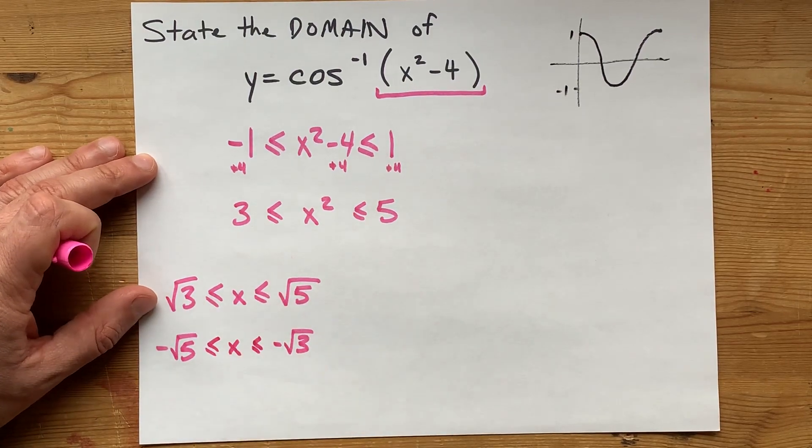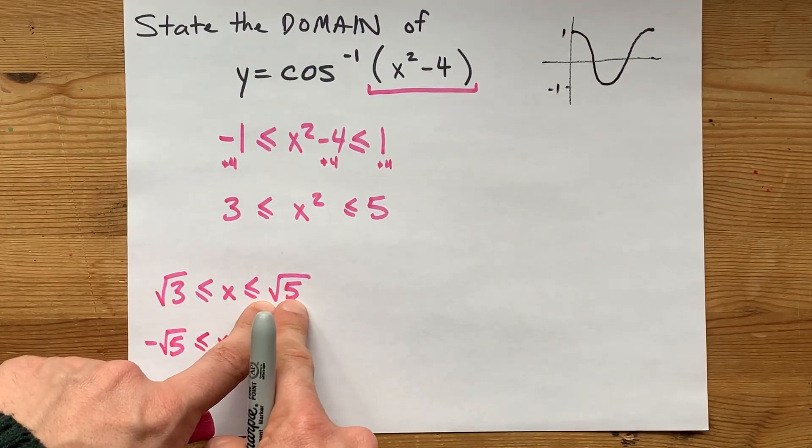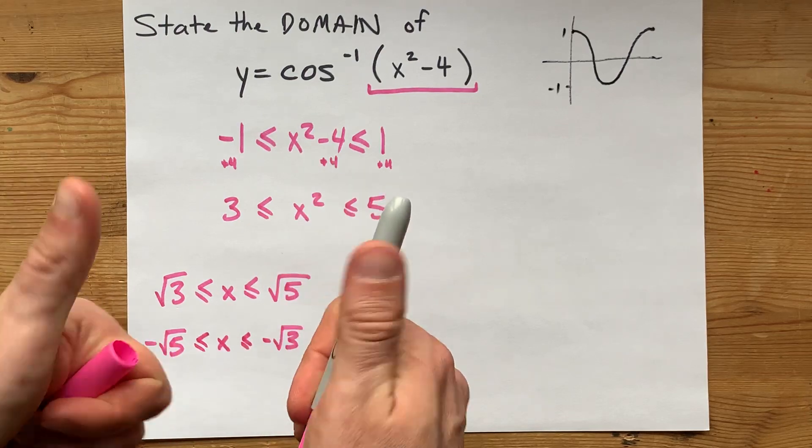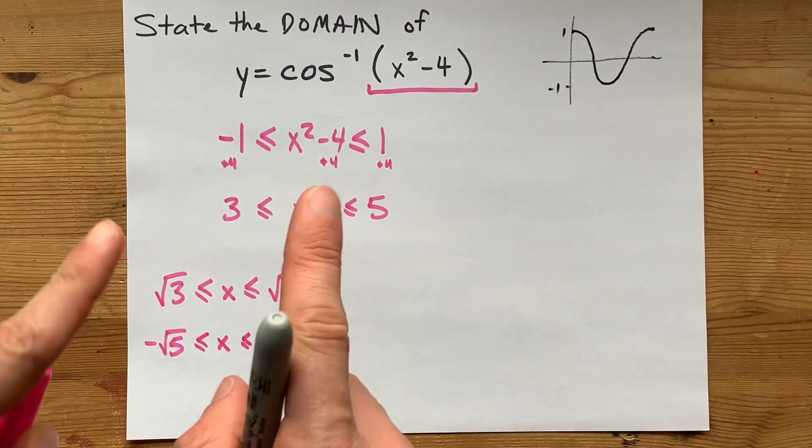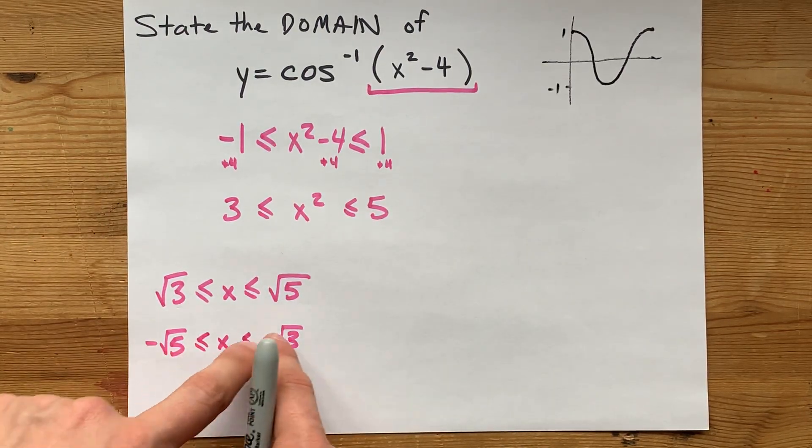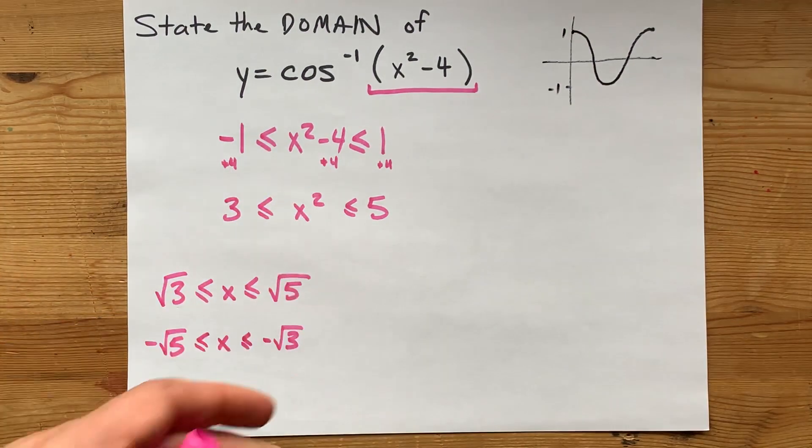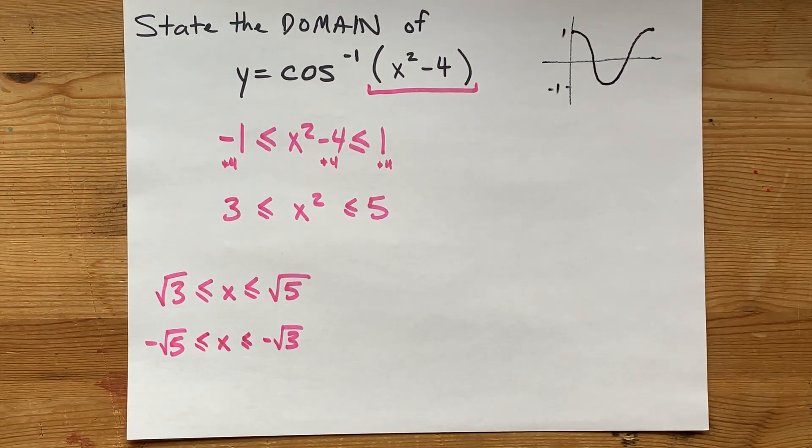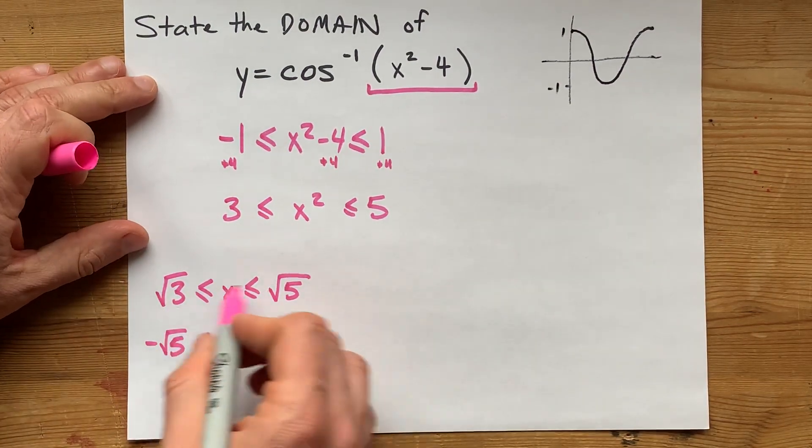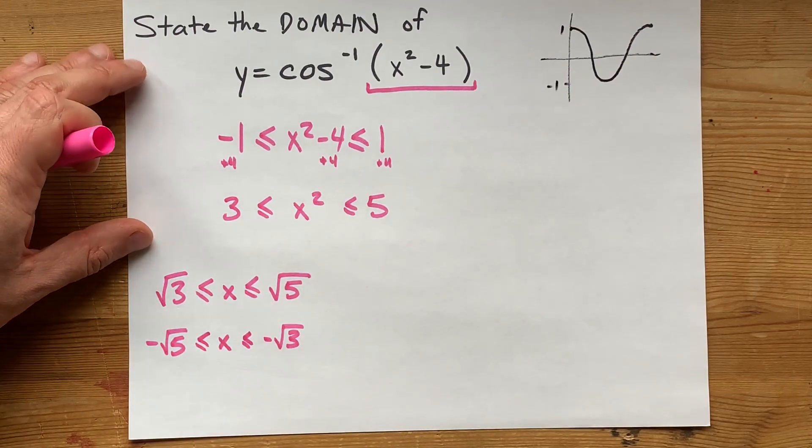So, if x is between root 3 and root 5, it's in the domain of this function. But also, if it's between negative root 5 and negative root 3, it's also part of this function. Your domain is the union of these two sets together.